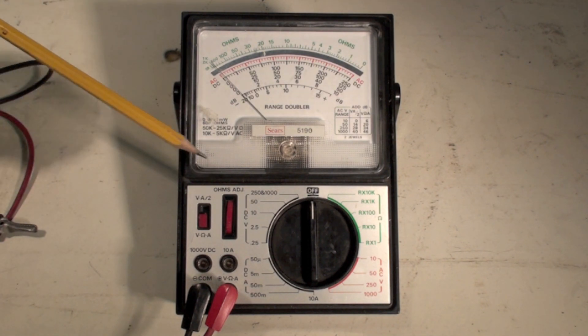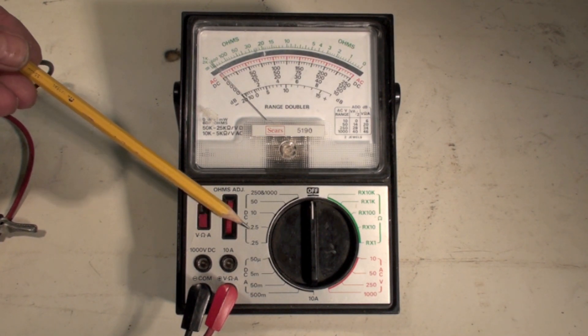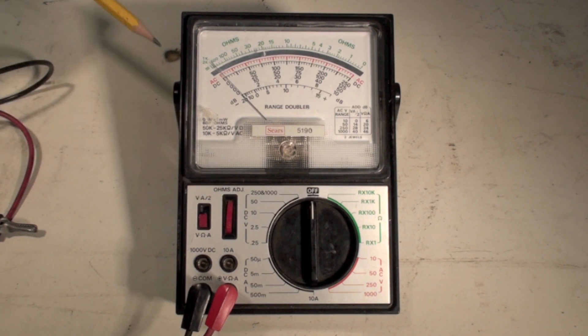Most new meters are auto-ranging, so you don't have to do all these settings. But in this case, you see we've got DC volts here, so that's direct current, that'd be batteries and the like. We have AC volts over here. That would be your outlet voltage in your home.